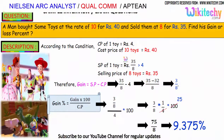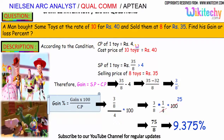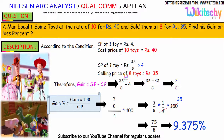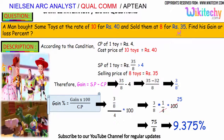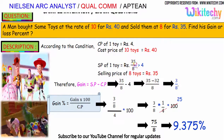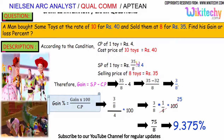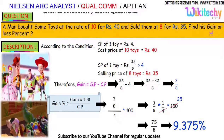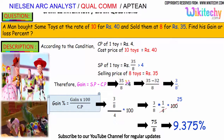According to the condition, the cost price of 1 toy is Rs 4, since the cost price of 10 toys is Rs 40. The selling price of 8 toys is Rs 35, so the selling price per toy is greater than Rs 4, meaning it should be a gain. The question asks for gain or loss percentage — it should be a gain, not a loss.